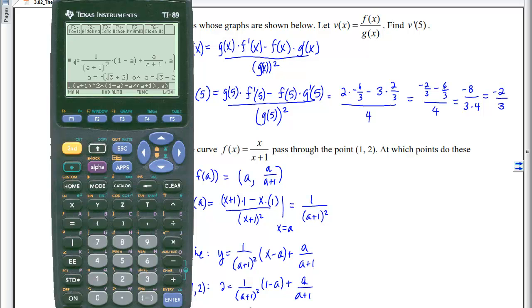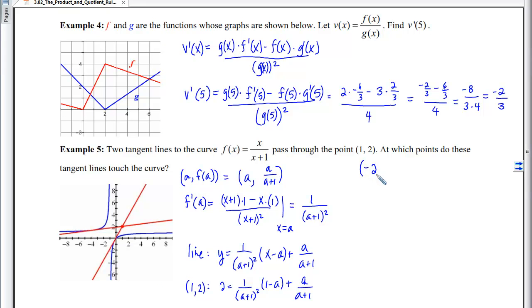So I have the x coordinates of the points on the curve, a negative 2 plus a root 3 and a negative 2 minus a root 3. Now my job is to find the points all together, so that means I need the y coordinate as well. So if I take this x coordinate and I plug it into the function, I'll get a negative 2 plus a root 3 on top, and a negative 1 plus a root 3 on the bottom because I added 1 to this input. Same thing here, I'll have a negative 2 minus a root 3 over a negative 2 minus a root 3 plus a 1. And I am done.